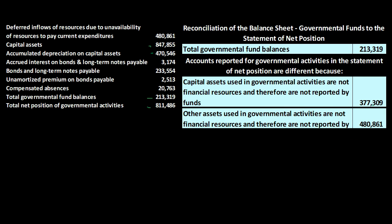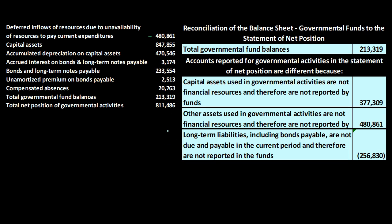The next difference: other assets used in governmental activities are not financial resources and therefore are not reported by the funds, picking up 480,861. This corresponds to deferred inflows of resources due to unavailability of resources to pay current expenditures. Because they're not financial resources, they're not on the fund side, and we list that as a reconciling item between accrual and modified accrual basis.